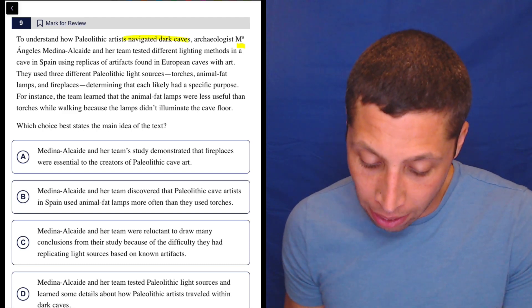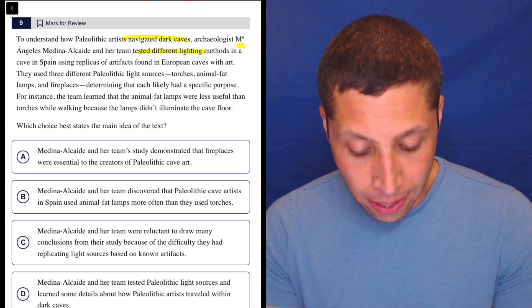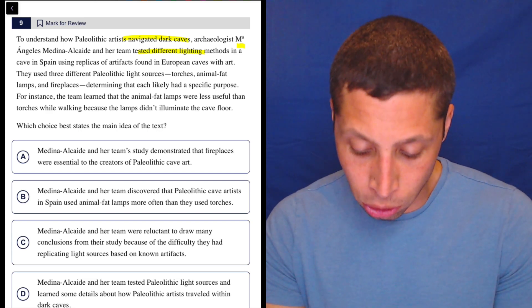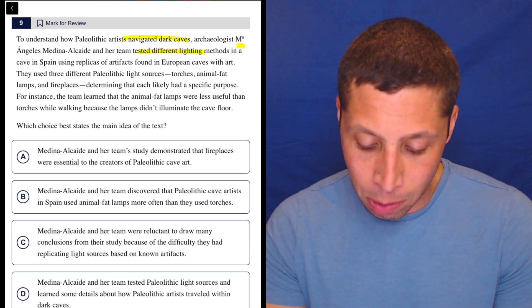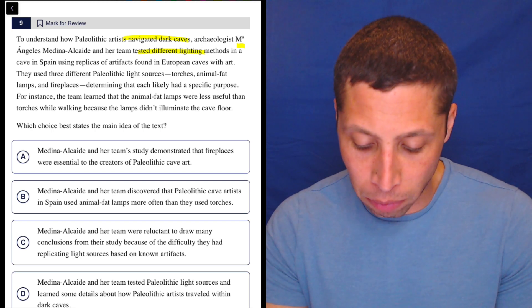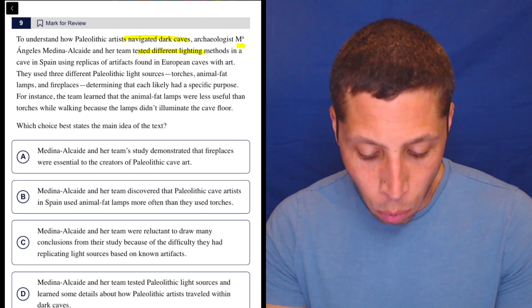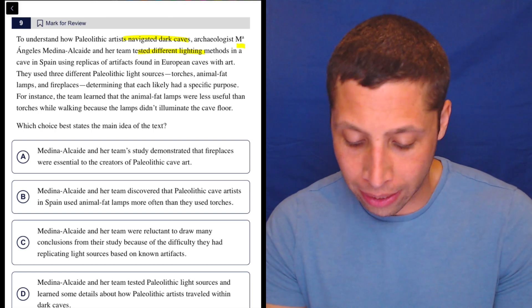So how did they navigate dark caves? I don't know. We're testing different lights. They used three different Paleolithic light sources: torches, animal fat lamps, and fireplaces, determining that each likely had a specific purpose. For instance, the team learned that the animal fat lamps were less useful than torches while walking because the lamps didn't illuminate the cave floor.